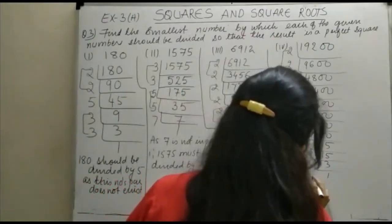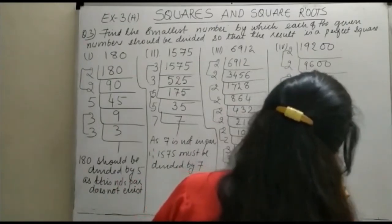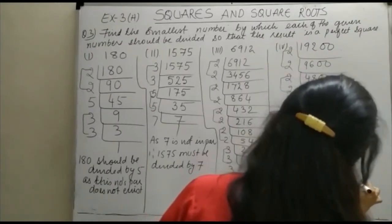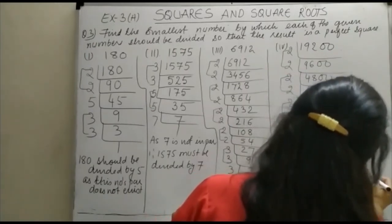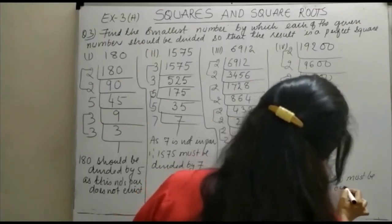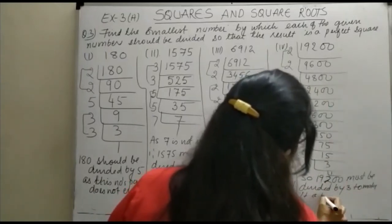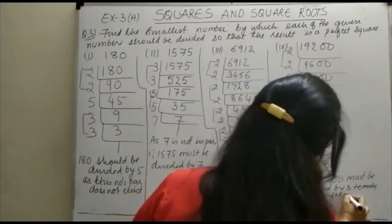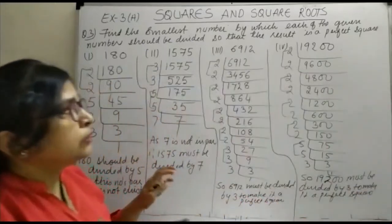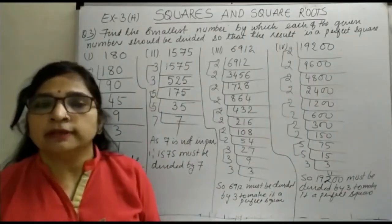So 19200 must be divided by 3 to make it a perfect square. This is the way how a given number which is not a perfect square can be made a perfect square by division.